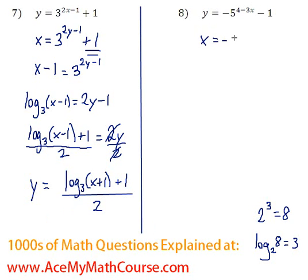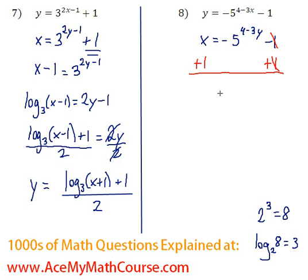For question 8, we again switch x and y because we're looking for the inverse, and we want to solve for y. So x plus 1 equals negative 5 to the power of 4 minus 3y.